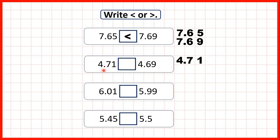Next we have 4.71 and 4.69. Both numbers have 4 ones, but if we look at the tenths we can see that the number with 7 tenths — 4.71 — must be larger. It doesn't matter that the second number has more hundredths, because tenths are larger than hundredths.